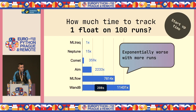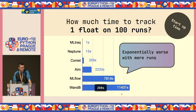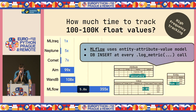Now let's say we track one float across 100 runs — a very simple experiment repeated 100 times. Here things are a bit different: MLtrack becomes faster, while MLflow and Weights & Biases get very, very slow — slower than linear, becoming exponentially slower as we add more runs. So if your experiments have a large number of runs or configurations to test, MLflow and Weights & Biases get extremely slow.